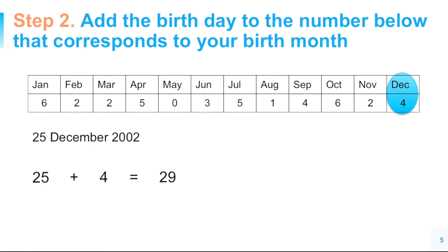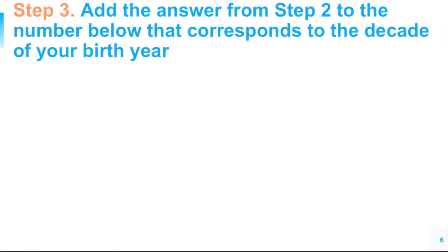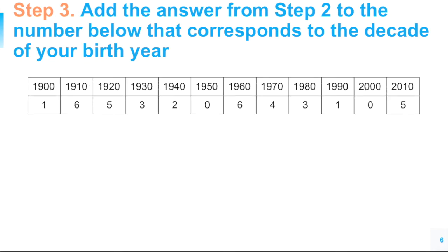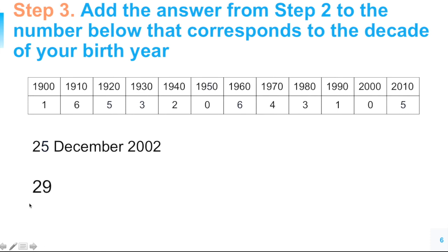Let's remember this result, which is 29, because we need this for step 3. Step 3 is to add the answer from step 2, which was 29, to the number that corresponds to the decade of your birth year. Our birth year is 2002, so the decade is 2000. If your birth year were 1975, the decade would be 1970. The number below 2000 is 0, so the answer remains 29.